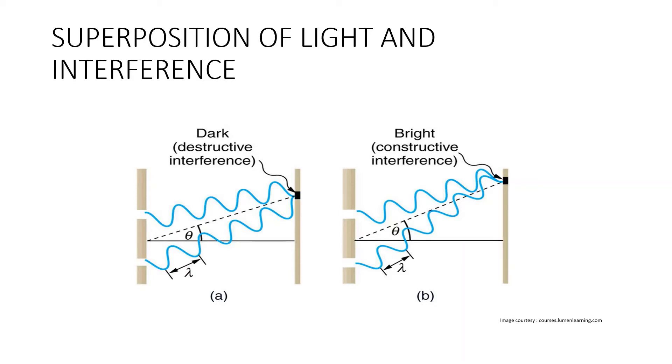If two waves superimpose with each other in the opposite phase, the amplitude of the resultant is equal to the difference in amplitude of individual waves resulting in the minimum intensity of light. This is known as destructive interference.